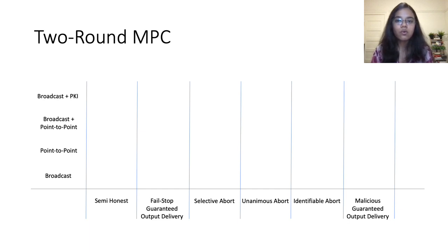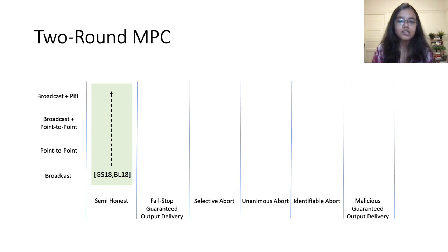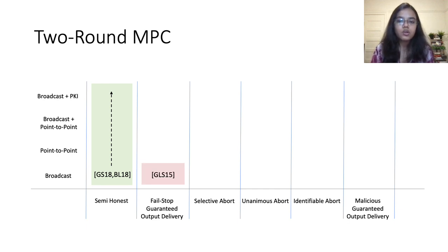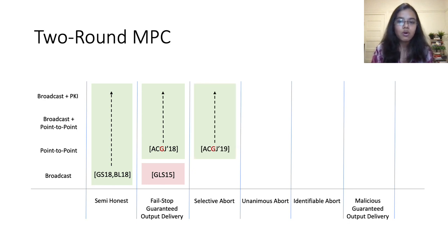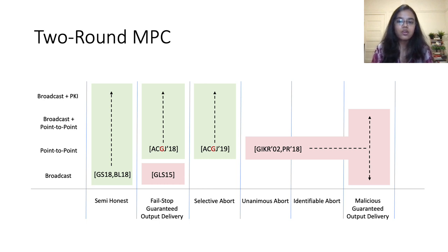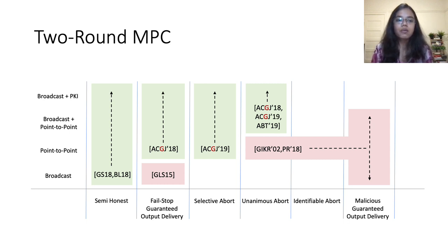Let's now get an idea of what is already known in the two-round MPC setting. For semi-honest security, Garg et al. and Benor-Moda et al. designed protocols in the broadcast-only setting; since broadcast can be emulated over point-to-point channels in the semi-honest setting, this establishes feasibility in all models. Gordon et al. showed that fail-stop guaranteed output delivery is impossible in the broadcast-only setting, while Anant et al. established feasibility in all other communication models. For selective abort, Anant et al. established feasibility in all communication models except broadcast-only. Gengen et al. and Pathra et al. established impossibility of unanimous abort, identifiable abort, and malicious guaranteed output delivery in certain communication models. Finally, Anant et al. established feasibility of unanimous abort in the broadcast plus P2P and broadcast plus PKI models.